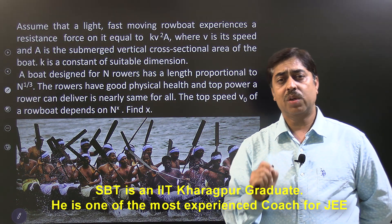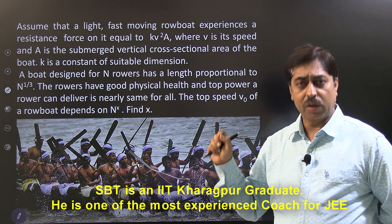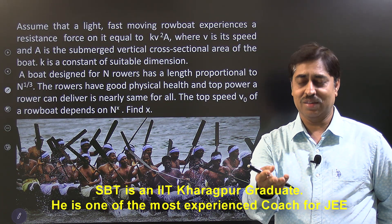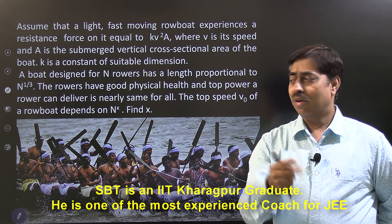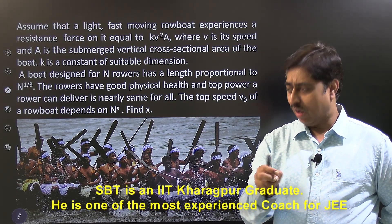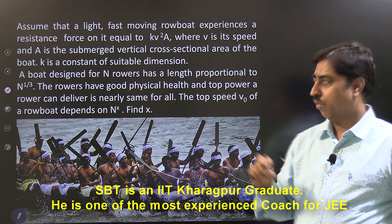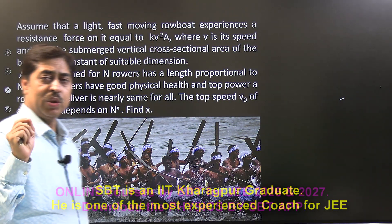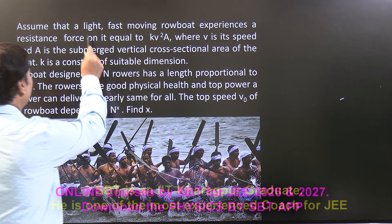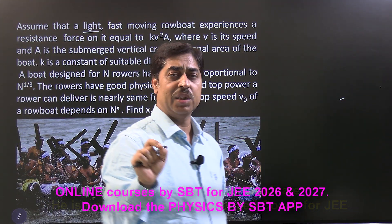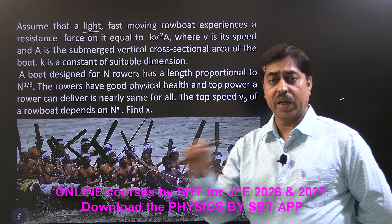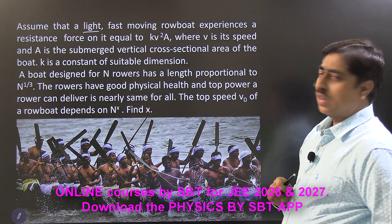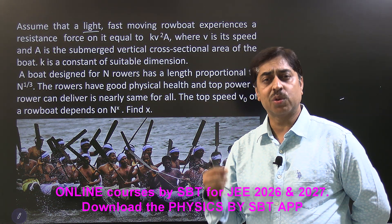Basically we have to figure out how the top speed of the boat depends on the number of boatmen. Many of you would like to pause at this juncture and give it a try on your own, though the statement of the question might require a little clarification. The first and foremost keyword is that the boat itself is light — that means the weight of the boat is negligible compared to the weight of the people riding it, so we have to ignore the weight of the boat in this context. The boat experiences a resistance drag force proportional to the square of its speed.